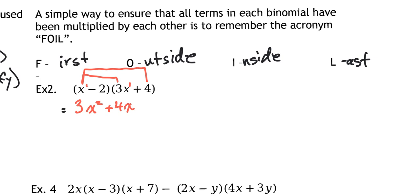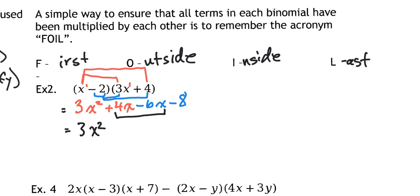The Inside and Last steps: take the inside term of the first bracket and multiply by everything in the last bracket. So negative 2 times 3x gives negative 6x, and negative 2 times positive 4 gives negative 8. Now collecting like terms: 3x squared, and for the middle terms 4x minus 6x gives negative 2x, then minus 8. Our solution is 3x squared minus 2x minus 8.